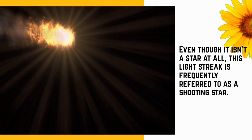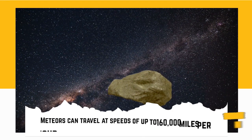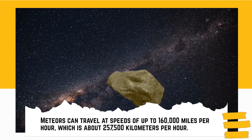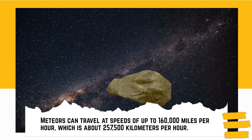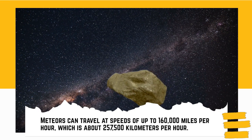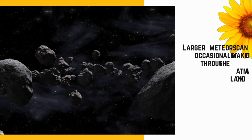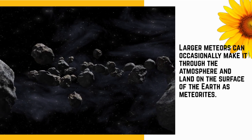Meteors can travel at speeds of up to 160,000 miles per hour, which is about 257,500 kilometers per hour. Larger meteors can occasionally make it through the atmosphere and land on the surface of the Earth as meteorites.